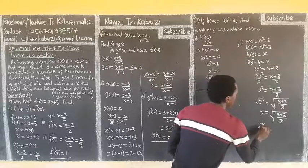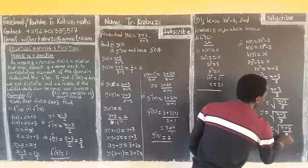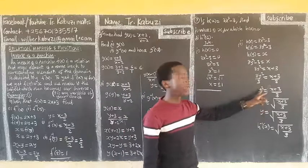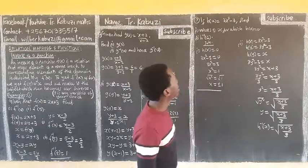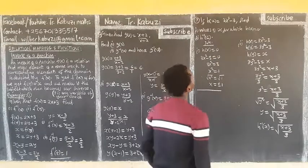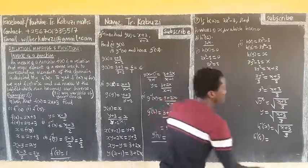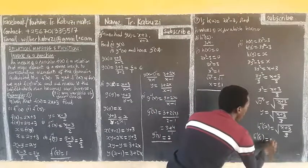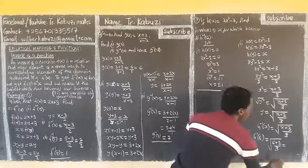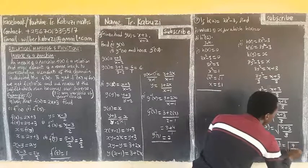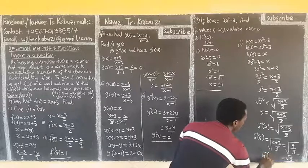Now, h inverse of 6 means where there is x I put 6. So I have the square root of 6 plus 3 over 3, which is the square root of 9 over 3. And this gives me the square root of 3. So h inverse of 6 is the square root of 3.